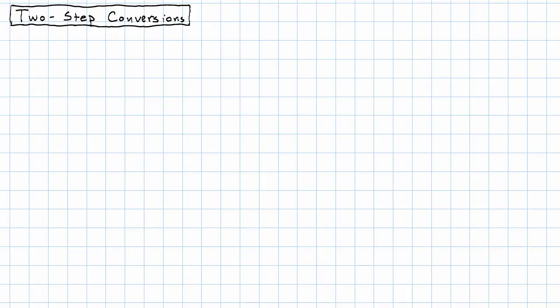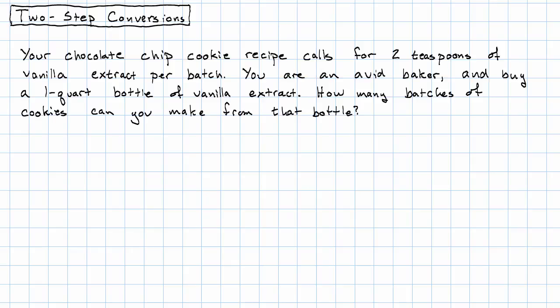Let me give you an example of a place where we might actually want to do a conversion like this. Suppose your chocolate chip cookie recipe calls for two teaspoons of vanilla extract per batch. You're an avid baker, so you go out and buy a one-quart bottle of vanilla extract. And you want to know how many batches of cookies you're going to be able to make using that one-quart bottle.